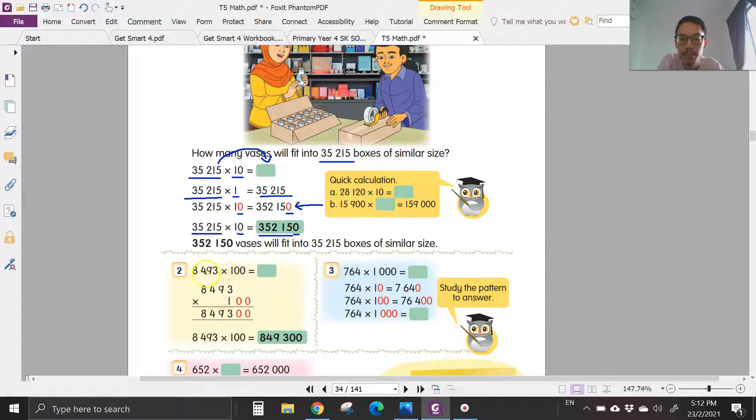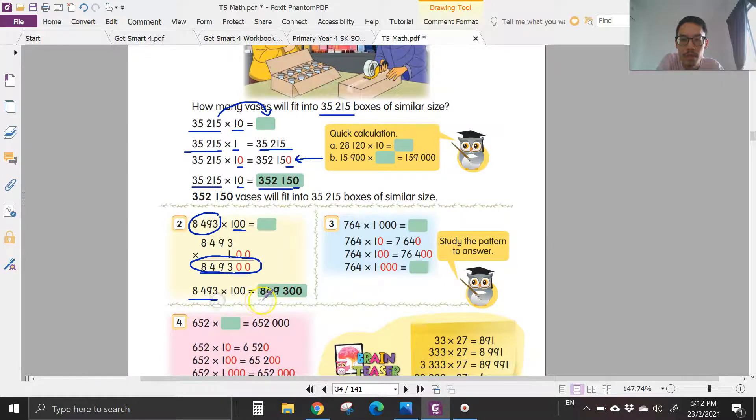What about times 100? Times 100 there are two zeros, so you copy the numbers in front and then add two zeros behind, so you get 849,300. What about three zeros? Times 1000. Same thing, you copy 764,300 and add three zeros behind, so your answer is 764,300,000.